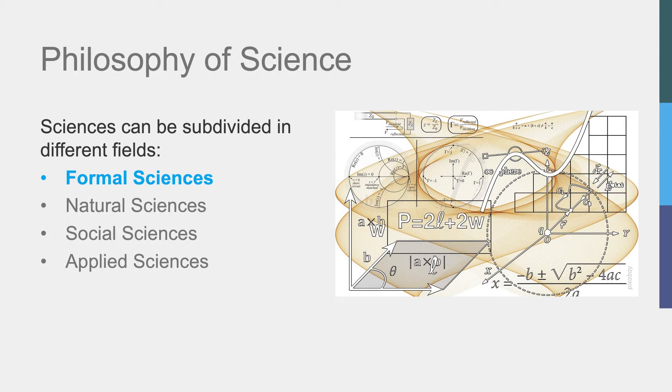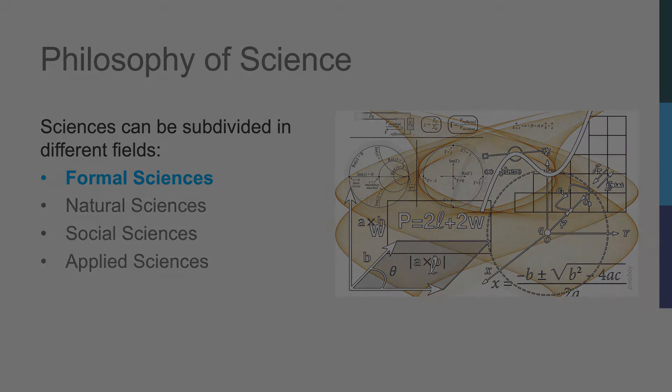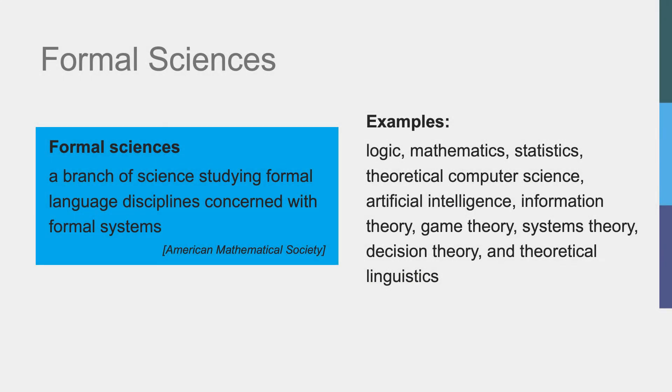What is science? Science philosophers define science as knowledge. Typically, science is divided into four fields. The oldest field is that of the formal sciences, which encompasses math and logic. The formal sciences are defined as a branch of science studying formal language disciplines concerned with formal systems.